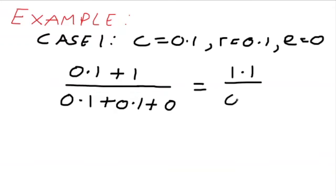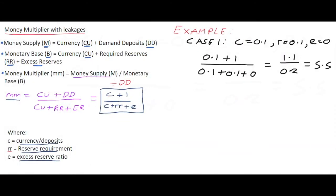Working that out, 1.1 divided by 0.2 gives us 5.5. So the money multiplier in Case 1 — with a 10% reserve requirement, a 10% currency-to-deposit ratio, and no excess reserves — is 5.5. That means one euro deposited into the banking system can potentially create 5.5 times that amount in additional money in the economy.